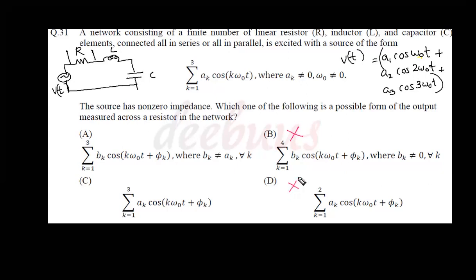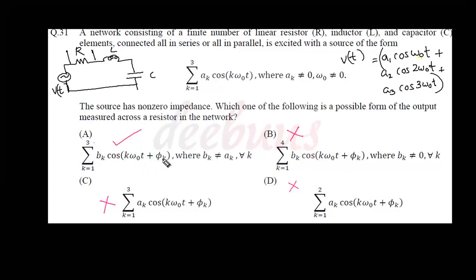Option C indicates the output voltage across the resistor equals the input voltage, which is also impossible since some voltage must drop across the inductor and capacitor. Option A shows ∑(k=1,2,3) Bₖcos(kω₀t + φₖ) with Bₖ ≠ Aₖ — only three frequency terms with different coefficients and phase shifts introduced by the inductor and capacitor combination. This is the correct answer.